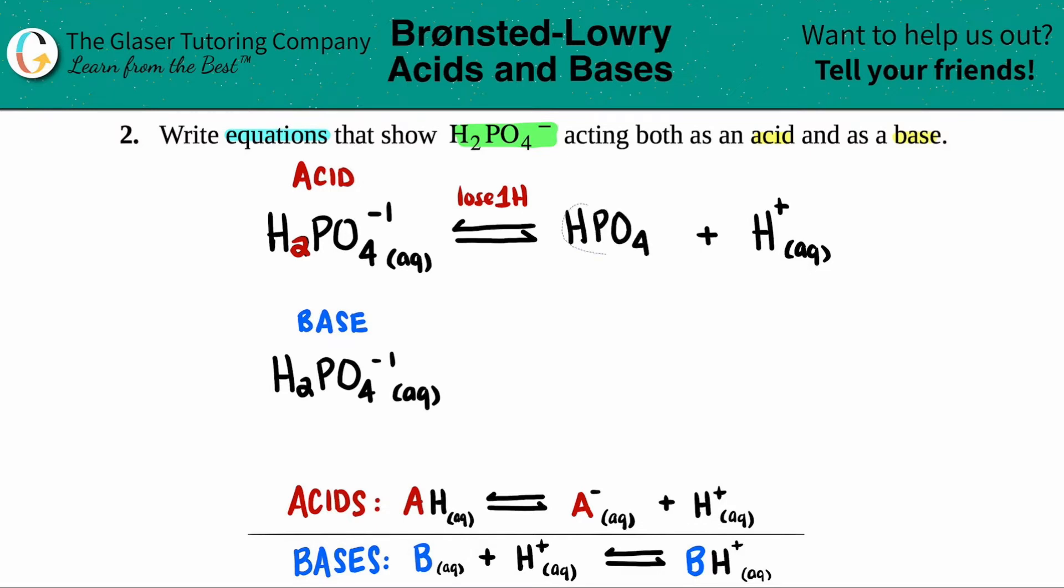Half the battle is won. Now, all we have to do is one more thing. We just have to worry about the charges. When you lose one H, you basically will minus one. You'll subtract one from the charge that was given. In this case, it's a negative one charge.